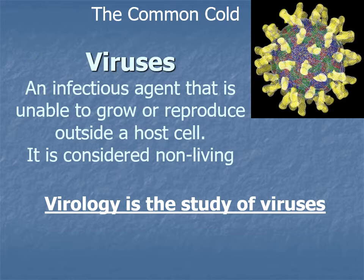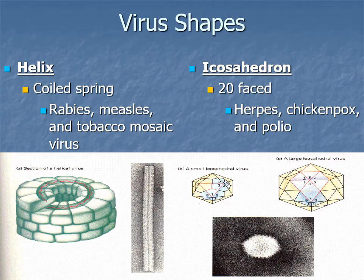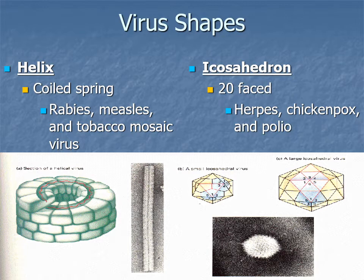Viruses come in a variety of shapes, and just like everything in biological systems, shape dictates function. The shapes of viruses are what allow them to get into your cells. Some are helix-shaped like a coil spring — that includes rabies, measles, and the tobacco mosaic virus that attacks tobacco plants. An icosahedral shape includes herpes, chicken pox, and polio. These shapes help them trick cells into letting them in.